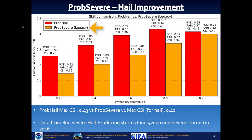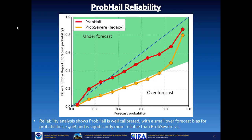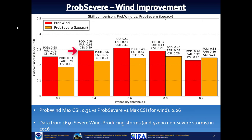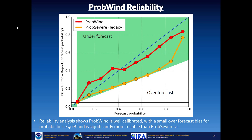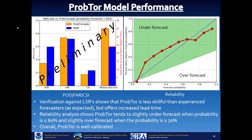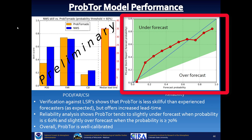The next slides compare legacy PROB SEVERE with the individual all-hazards products — PROB HAIL, PROB WIND, and PROB TOR. PROB HAIL shows significant improvement over legacy PROB SEVERE for hail reports, and is much better calibrated. PROB WIND also shows improvement: probability of detection is higher, false alarm rate is generally lower, and reliability is better. Preliminary statistics for PROB TOR show the chief benefit is better lead time, and overall PROB TOR is well calibrated.